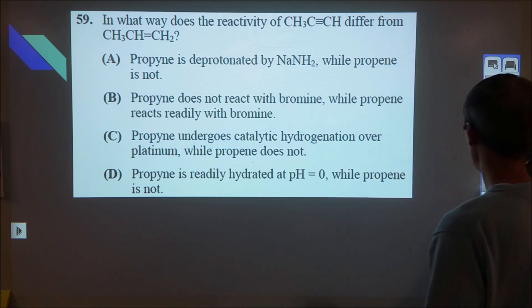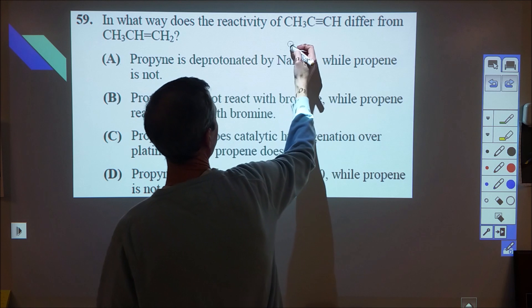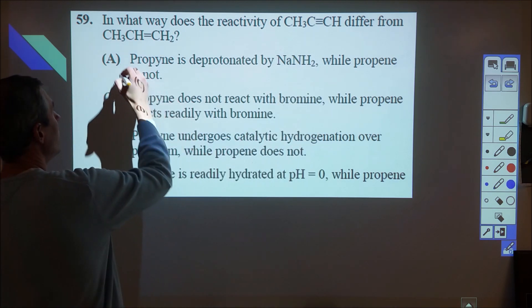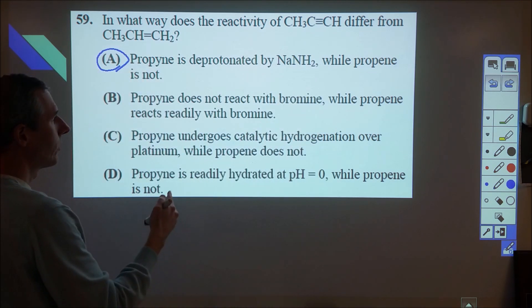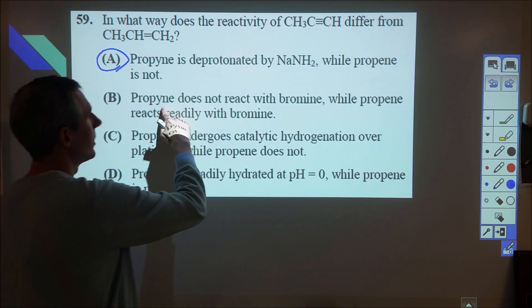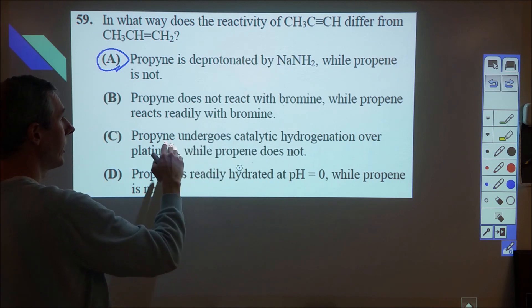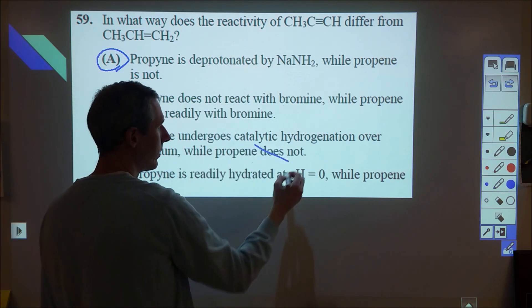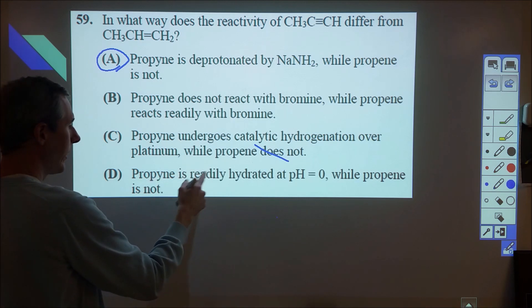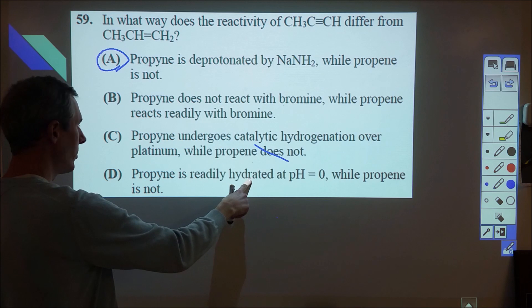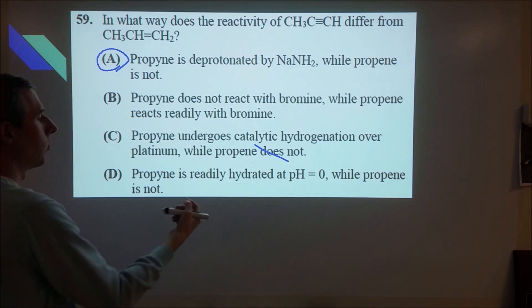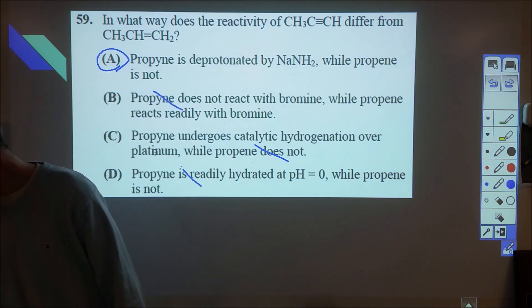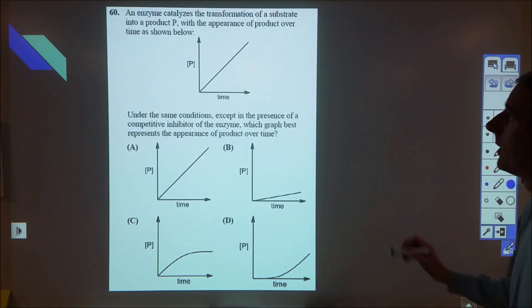59, I was not sure on, but I remembered back from organic time that definitely when we have a triple bond like this, that that is a decently acidic hydrogen. So we have a very strong base and this is a very strong base, but that would deprotonate. Most of the other ones are just incorrect. So even if you didn't know that, you might have been able to eliminate because propyne absolutely would react with bromine. And then propyne undergoes catalytic hydrogenation or platinum while propene is not. Both of those would undergo catalytic hydrogenation where you add hydrogen. And then this one is readily hydrated at pH 0 while propyne is not. So we're talking about adding a water with an acid catalyst. And again, both of those happen. So we could eliminate all three if you weren't familiar with that. You had to take organic chemistry.